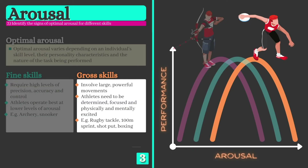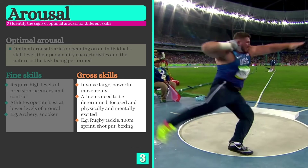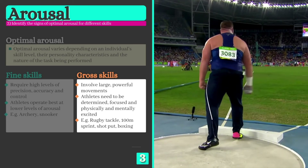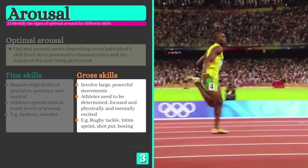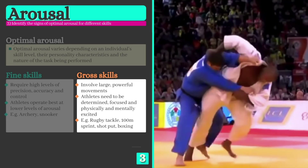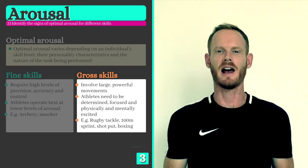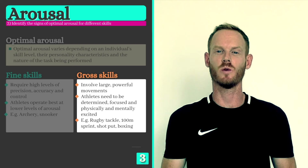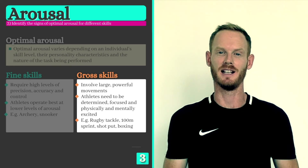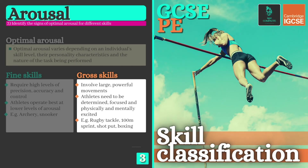Gross skills, on the other hand — for example a rugby tackle, 100m sprint, javelin throw, or boxing — require much higher levels of arousal. These skills involve large powerful movements and athletes need to be determined, focused, and both physically and mentally excited if they are to perform at the required intensity. If you don't quite understand what the terms gross and fine mean in the context of skills, I recommend you go and watch my video on skill classification by clicking on the banner.